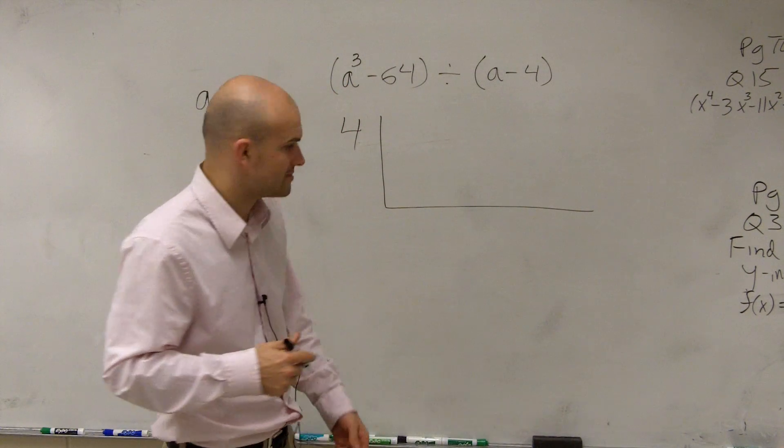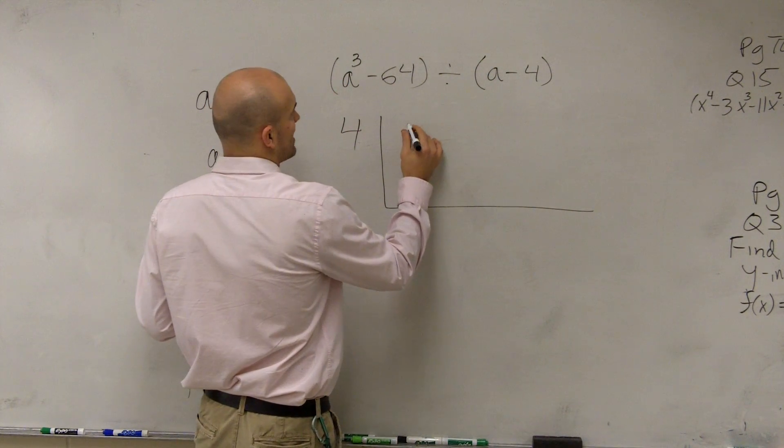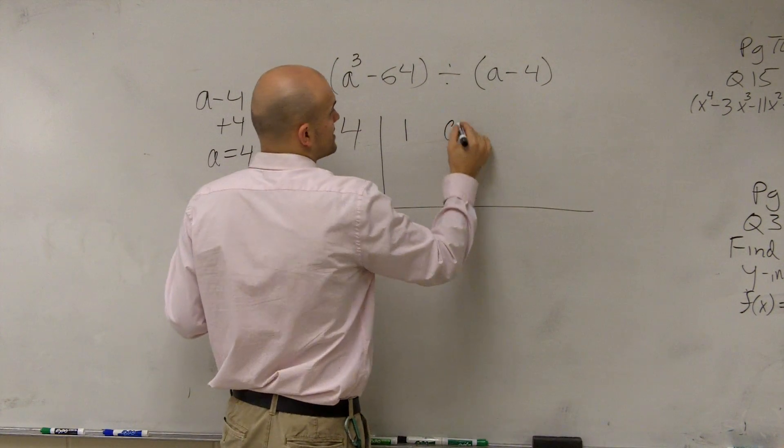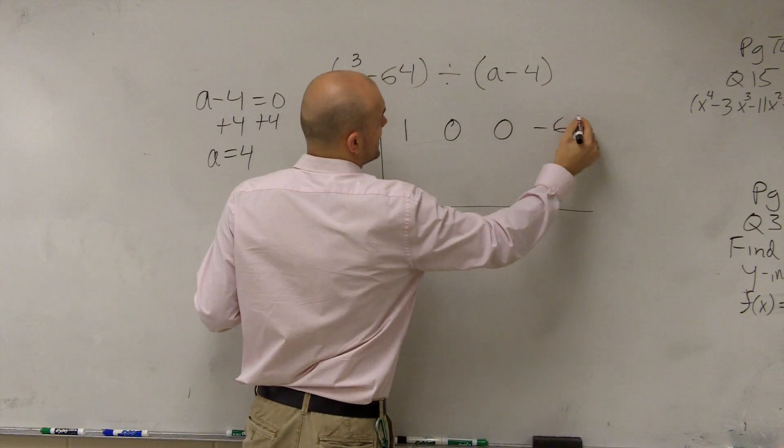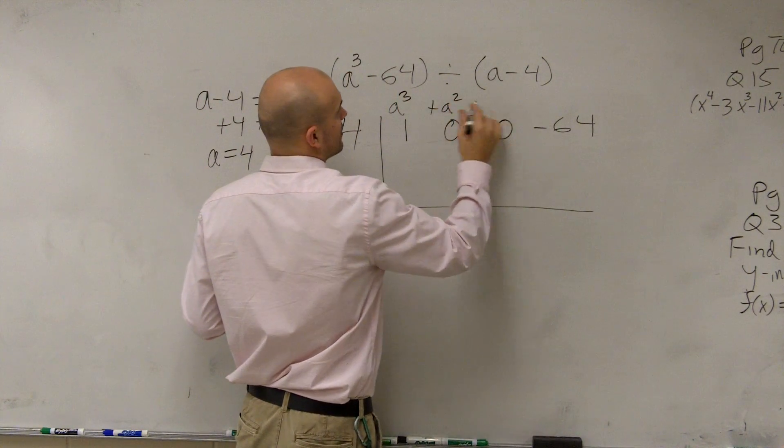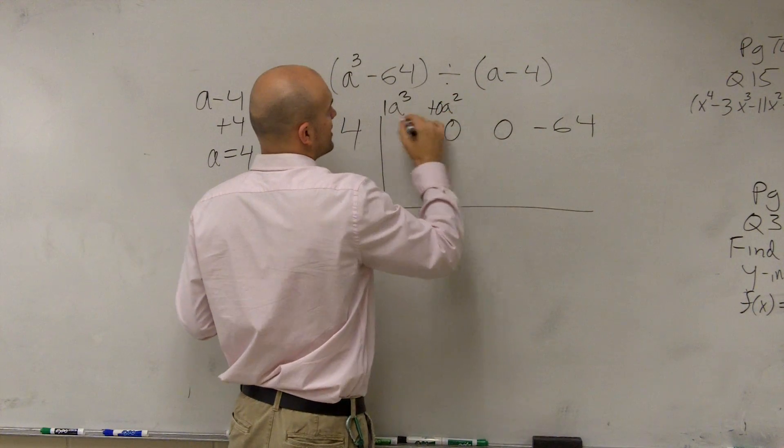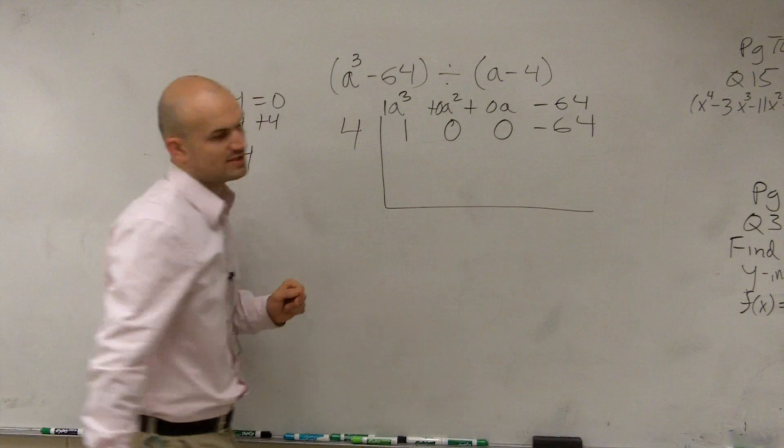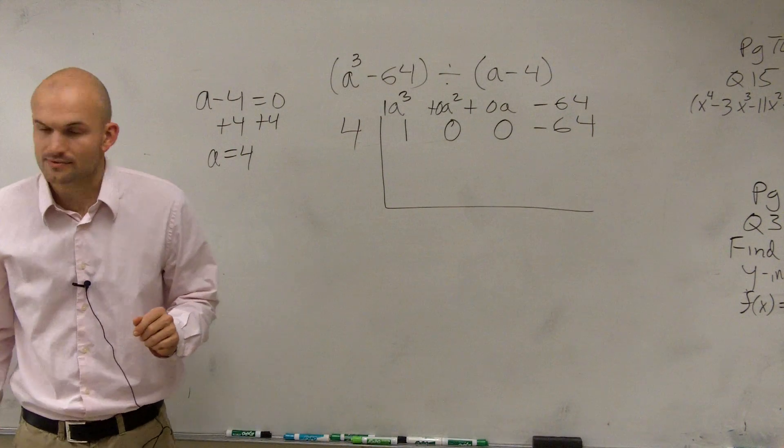you have to include the place values. So what we do is we have 1 because that's the coefficient of a cubed. Then we have 0, 0, negative 64. So this would be like a cubed plus 0 a squared plus 0 a minus 64. So does everybody see how I put in those values?